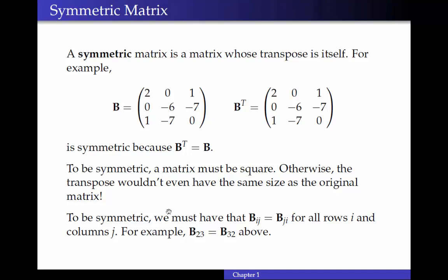And another way to talk about that symmetry is to say that Bij is equal to Bji. So the element in the ith row jth column is the same as that in the jth row ith column. I know that can be a mouthful, but for example, B23 is equal to B32. So the second row, third column is equal to negative seven, which is equal to the third row, second column.